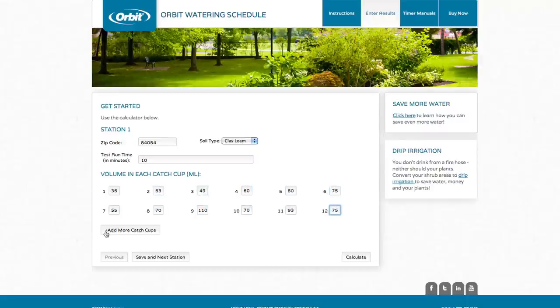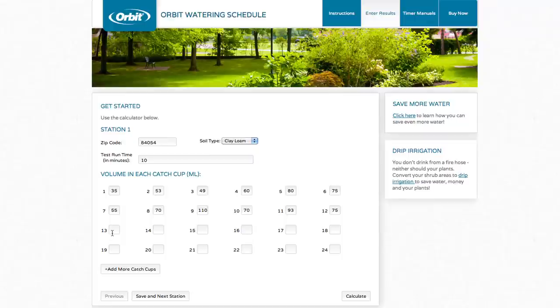If you need more than 12 catch cups, click the Add More Catch Cups button. If you ran the test for multiple stations, at this point you can click Save and Next Station to enter the results from additional stations. If you don't have any additional stations to enter, hit the Calculate button to get the results.